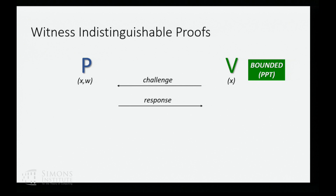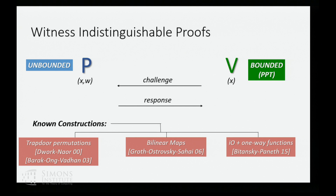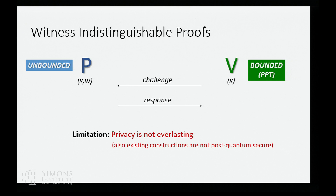Existing proof systems have been secure against only bounded or probabilistic polynomial time verifiers, and most have been secure against unbounded provers, which means they satisfy statistical soundness but they are not statistically witness indistinguishable. Known constructions are based on trapdoor permutations, bilinear maps, and more recently on IO and one-way functions. However, they all suffer from one important limitation: privacy is not everlasting. None of these existing constructions are secure if the verifier, after completing the proof, runs his computer for many years and tries to break the WI property. Also, existing constructions are not post-quantum secure.